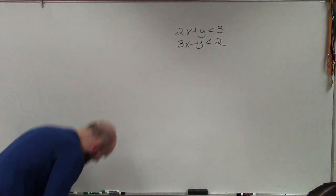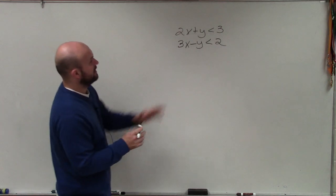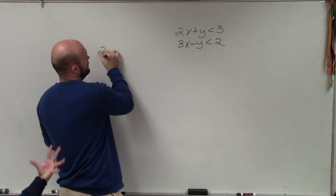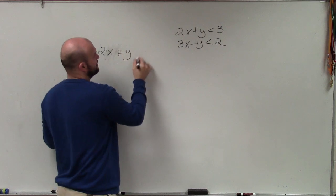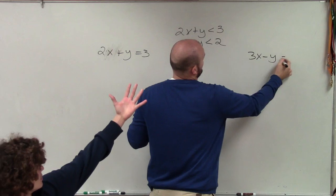So both of these inequalities I'm going to decide to graph using slope-intercept form. So to go ahead and do that, what I'm going to do is I'm going to solve for y in each case. So I have 2x plus y equals 3, and 3x minus y equals 2.